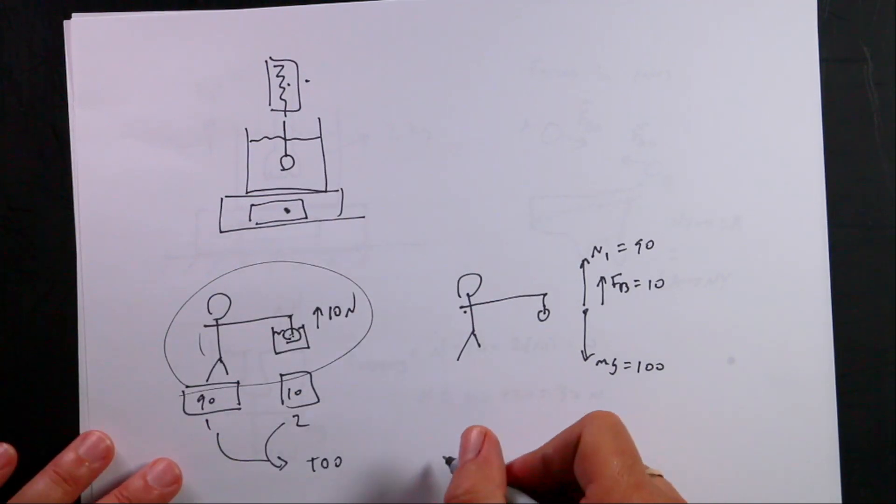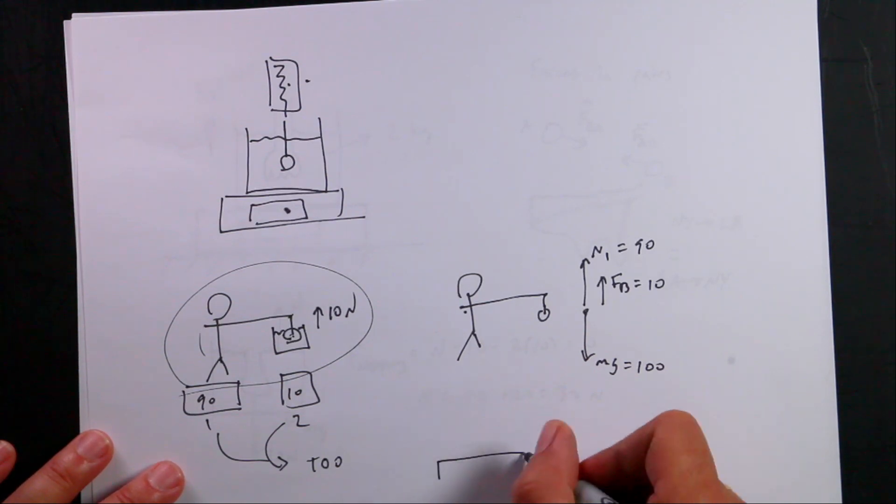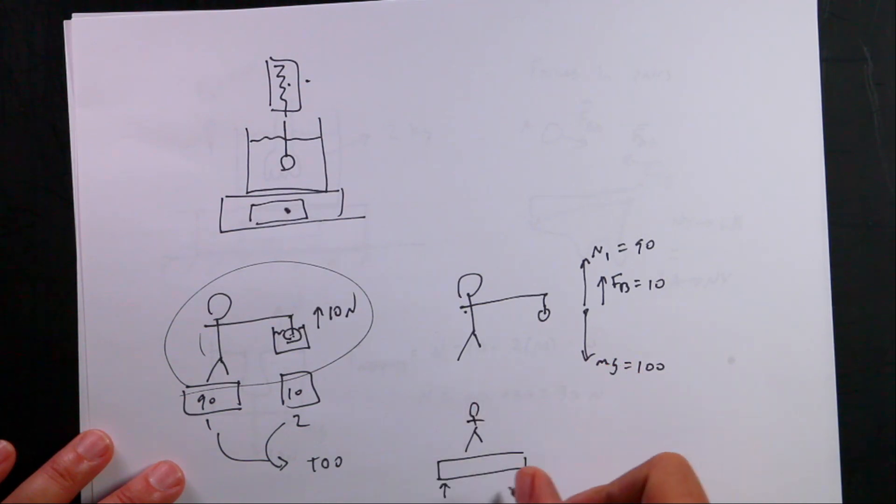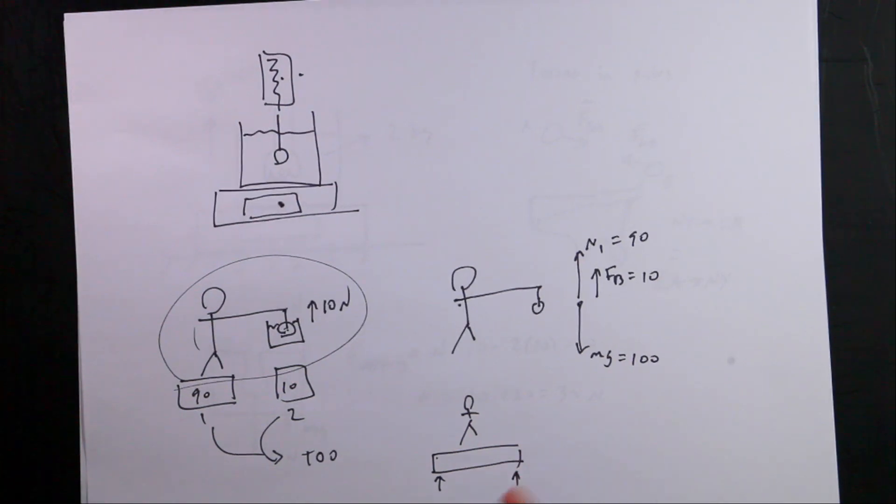You can do this also. In fact, the Nintendo Wii had a little board and you would stand on it, and it had four sensors in the corners. The total weight of all the sensors would have to add up to your weight. But if you lean to one side, this force would increase, that force would decrease, and it can tell how you're standing just by how you're standing on the board. It's kind of the same idea with these two scales. They have to add up to the total weight of you if you're at rest.